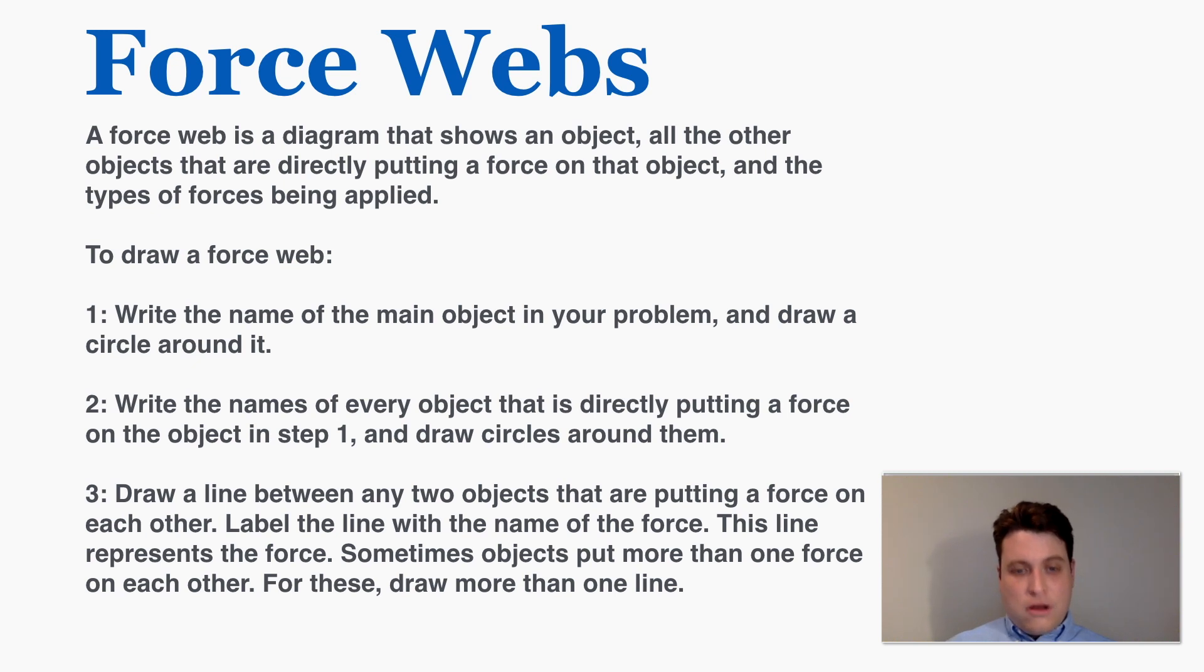Step number three, you're going to draw a line between any two objects that are putting a force on each other, label the line with the name of the force, and this line represents the force. Sometimes objects put more than one force on each other and for these you'll just draw more than one line.